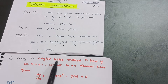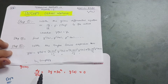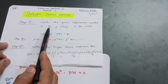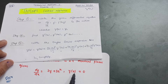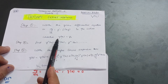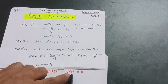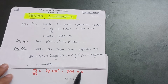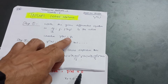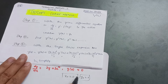Let's take a question: employ the Taylor series method to find y at x = 0.1, correct to four decimal places. The given differential equation is dy/dx = 2y + 3eˣ, where y(0) = 0. So x₀ = 0 and y₀ = 0 are our initial conditions.